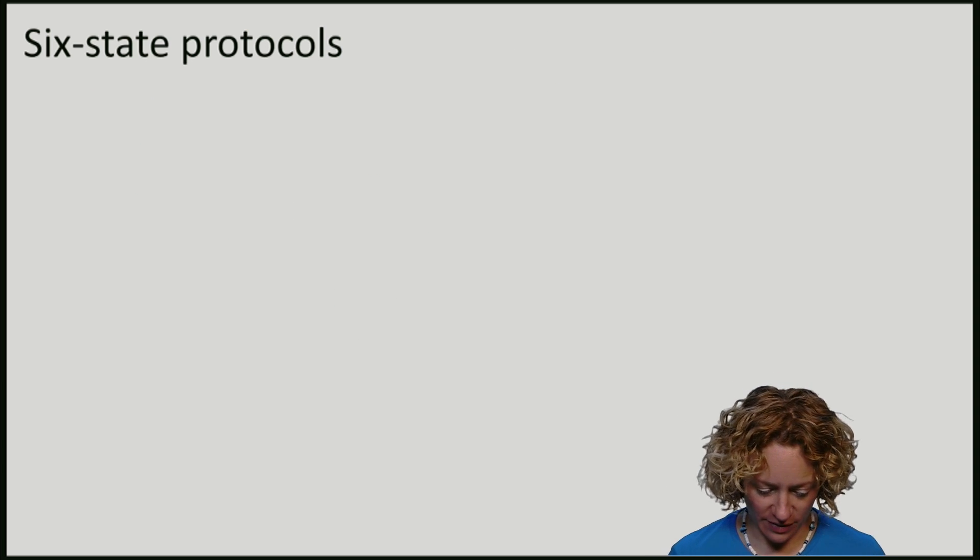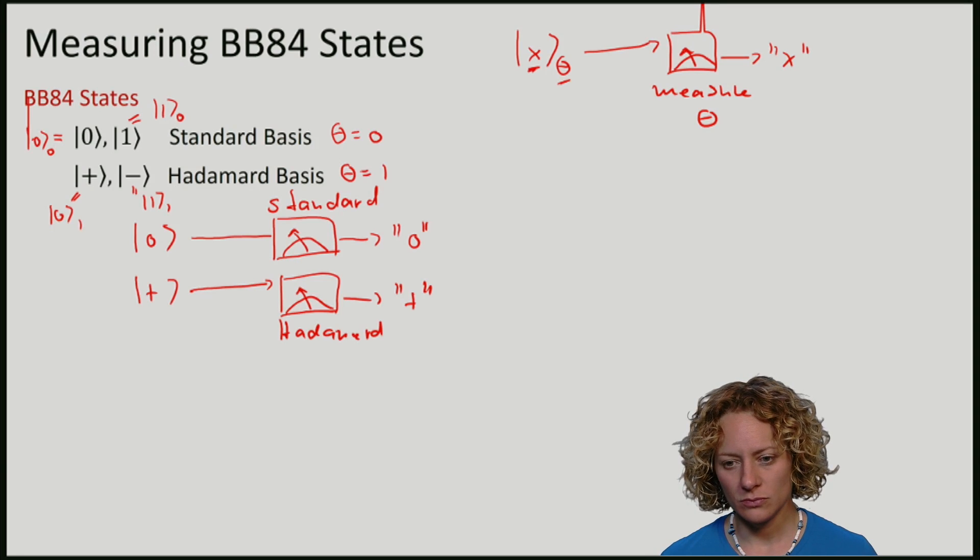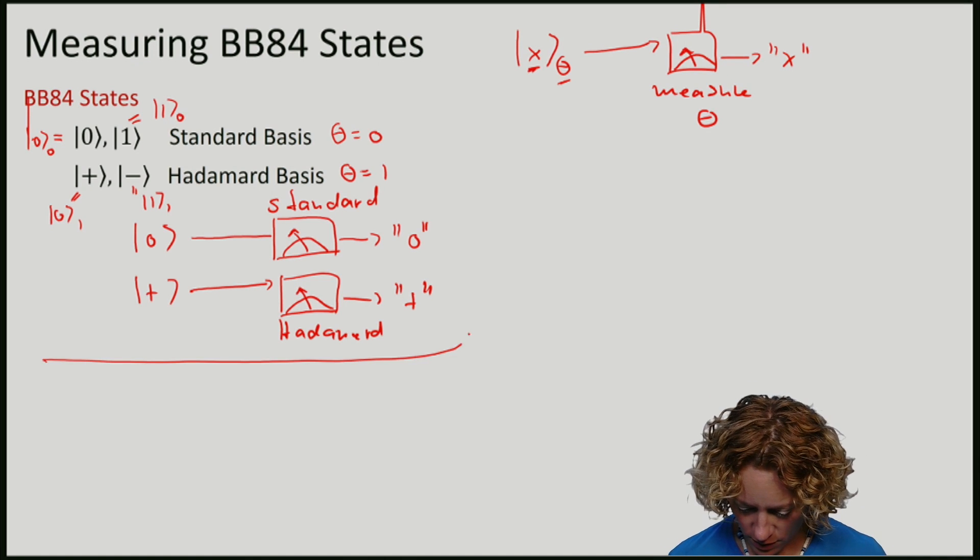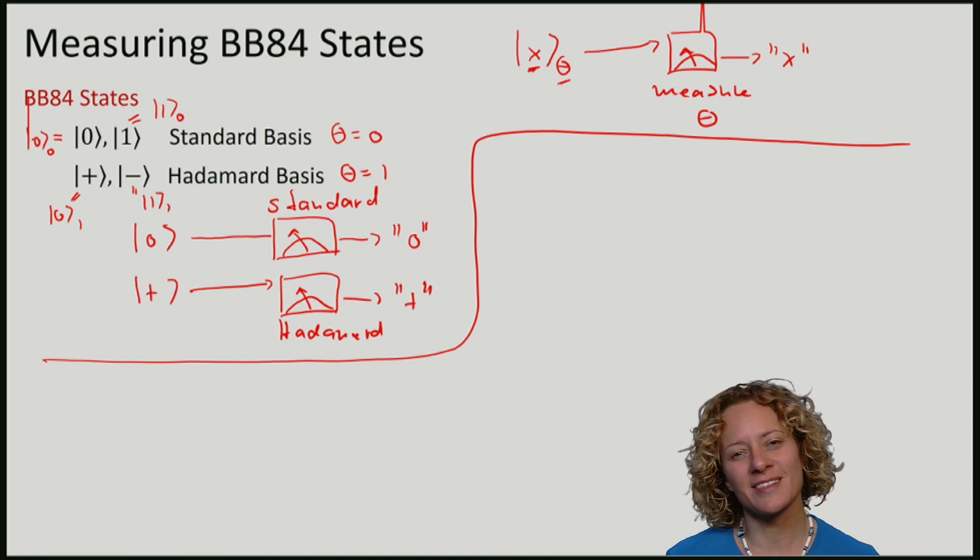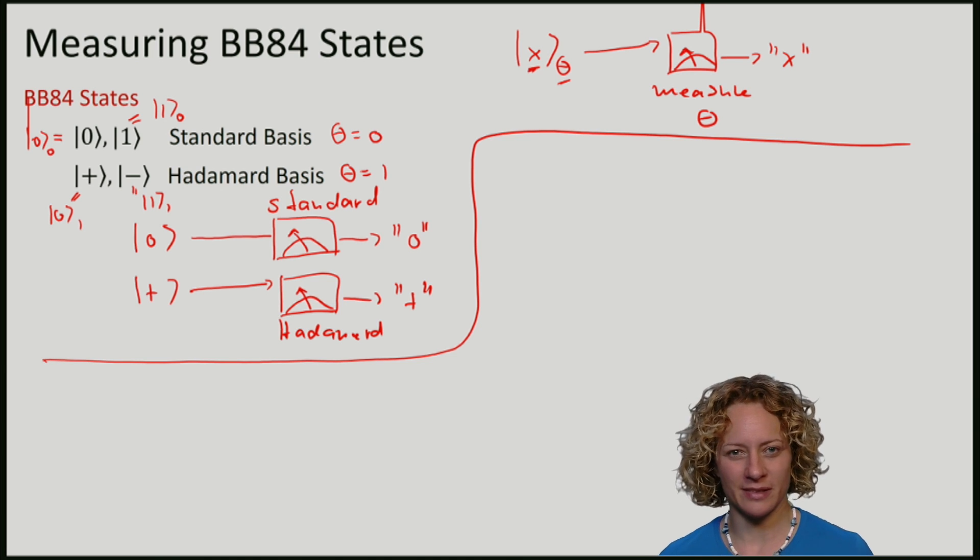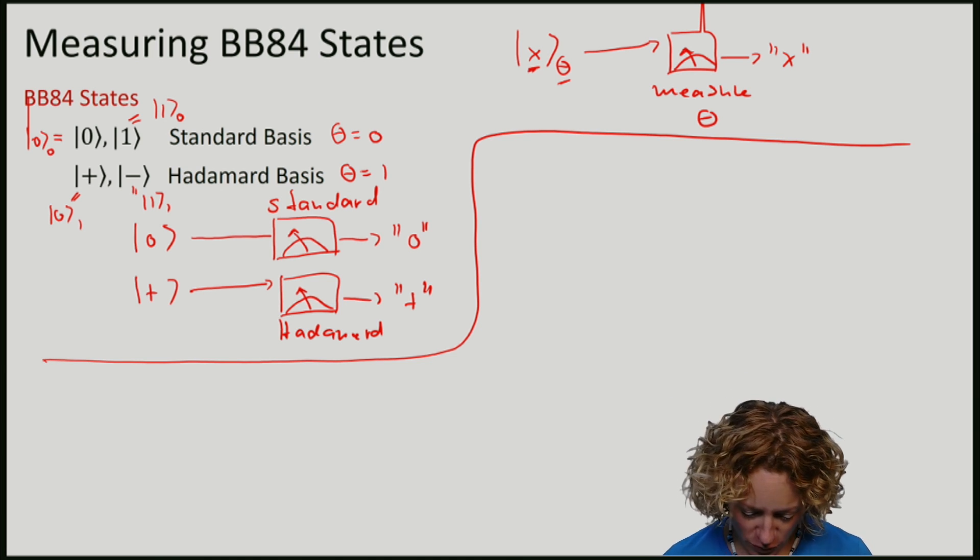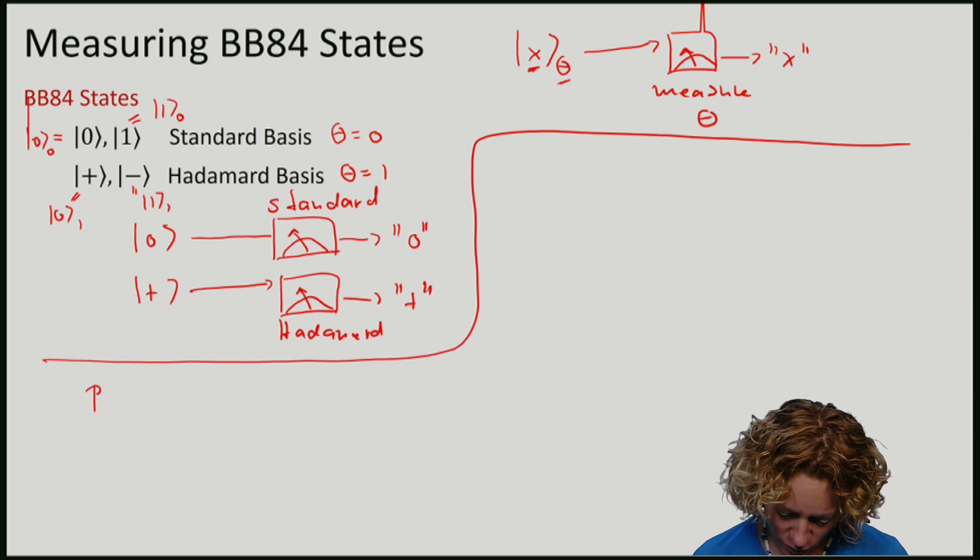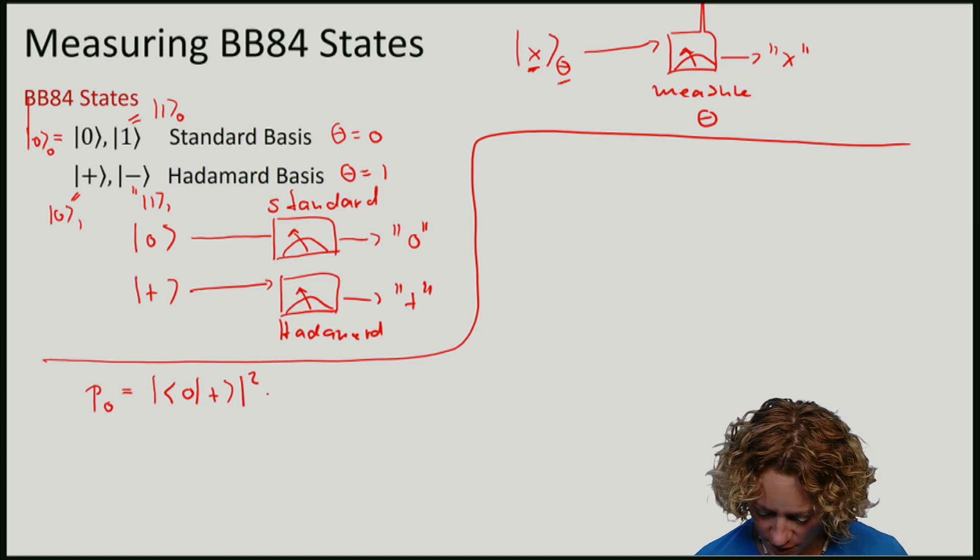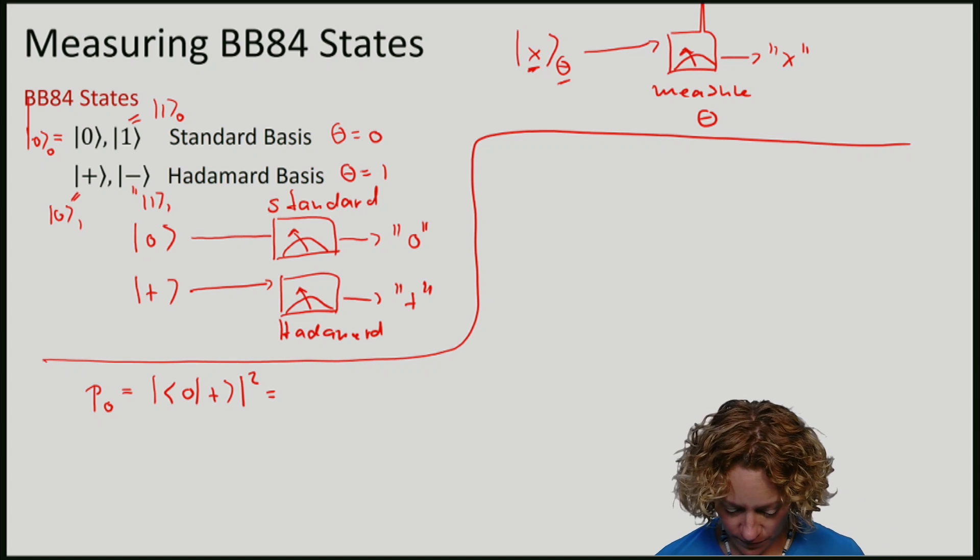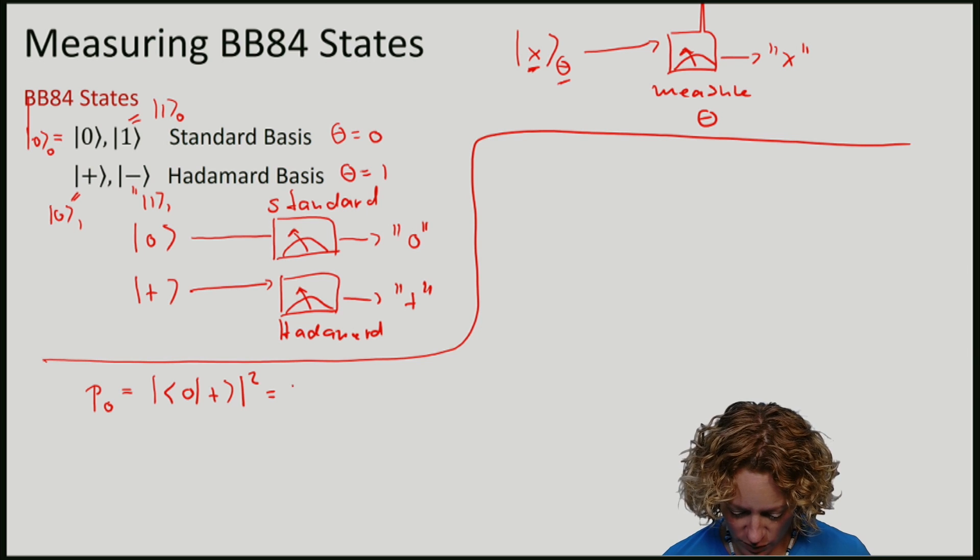What if I measure in the wrong basis? For example, I prepare in the standard basis but measure in the Hadamard basis. Let's compute the probability that I obtain outcome zero if I measure in the standard basis but prepare state plus in the Hadamard basis. If we compute this, we find that this probability is one half.